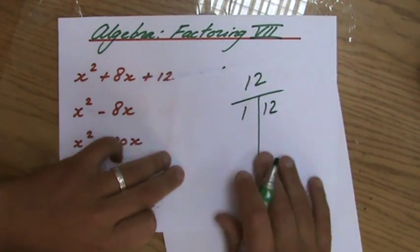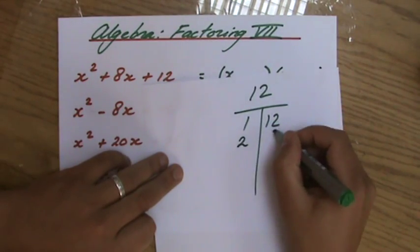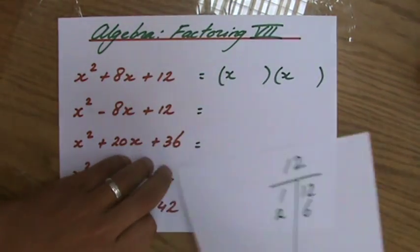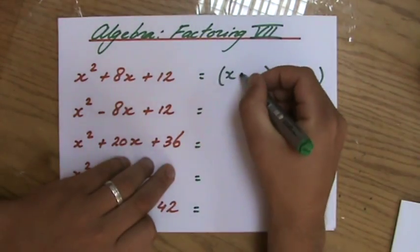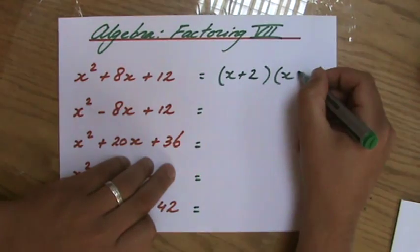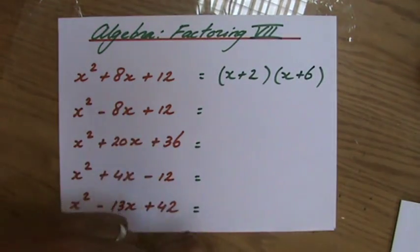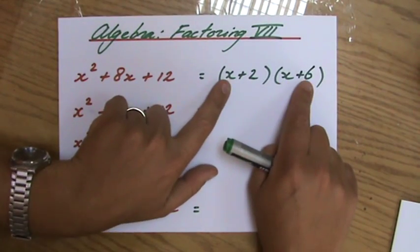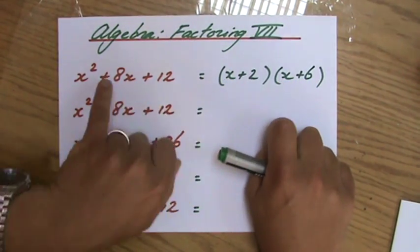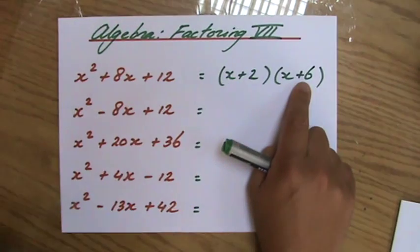1 times 12 is 12, but with a 1 and a 12, I can't make an 8. 2 times 6 is 12. I can make an 8 with a 2 and a 6, plus 2, plus 6. Quickly check that. x squared, 6x plus 2x is 8x, and 2 times 6 is 12.